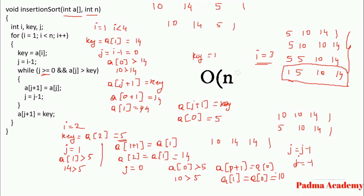The time complexity of insertion sort is O(N²), because it has a nested loop — that is, inside the for loop there is a while loop. Therefore the time complexity of insertion sort is O(N²).